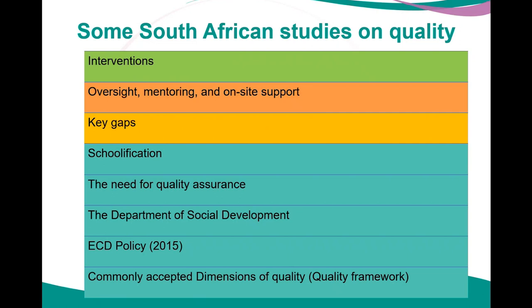Commonly accepted dimensions of quality include structural indicators such as the physical setting, teacher qualifications, and child-staff ratios. There is also recognition that process quality indicators — such as mediated teacher-child interaction, active play with concrete materials, and a holistic curriculum — have been shown to contribute to better child outcomes.